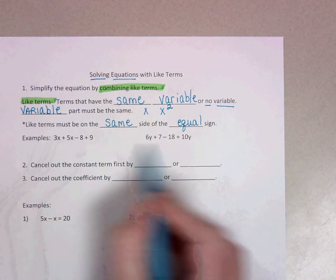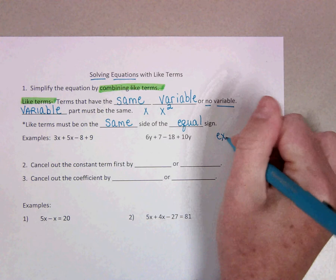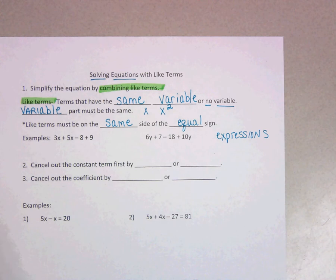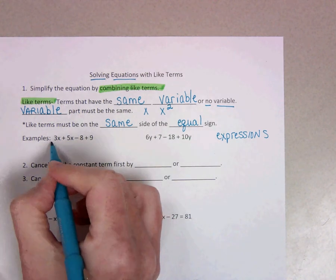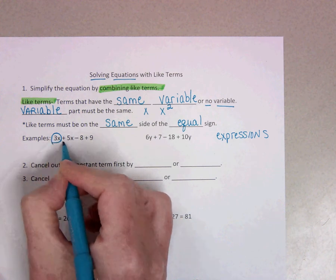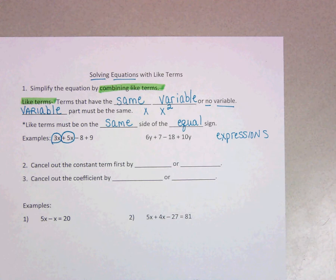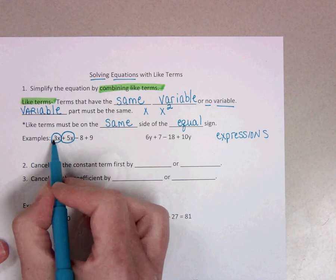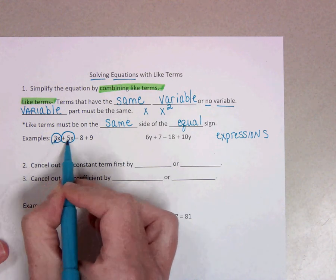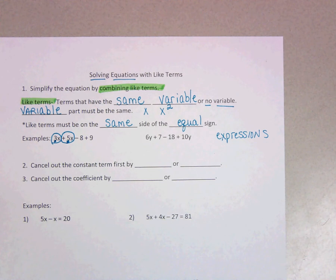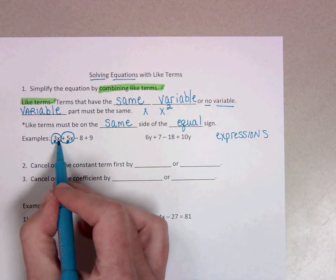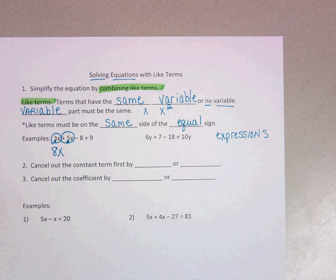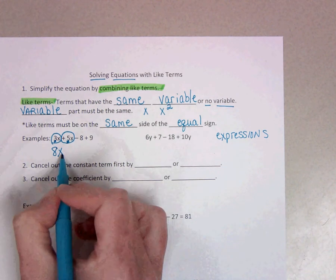So we're always going to look for like terms to combine first. Let's talk about some examples. These examples we have right here are not equations, they're expressions because they do not have an equal sign. If we look at this example, 3x and 5x are like terms because they both have x, and all we have to do is add their coefficient. Remember, the number in front of the variable is called the coefficient. So 3x plus 5x is simply 8x. You just add or subtract the coefficients, the numbers, and then the variable stays the same.